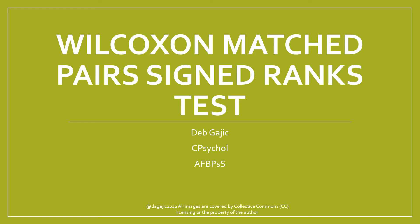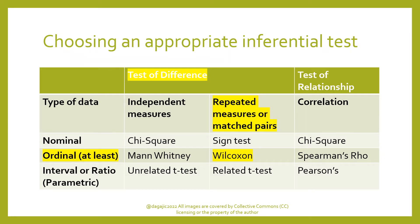This short video will take you through a step-by-step procedure on how to calculate the Wilcoxon matched pairs signed ranks test. A Wilcoxon test is used when we have a test of difference, when we're using a repeated measures or matched pairs experimental design, and when we have ordinal data. It's a non-parametric test.